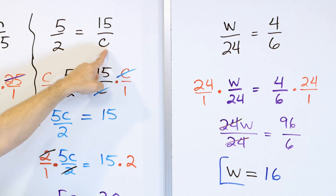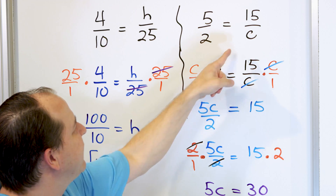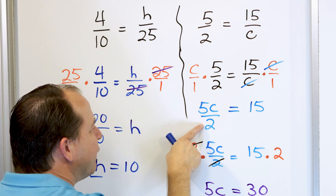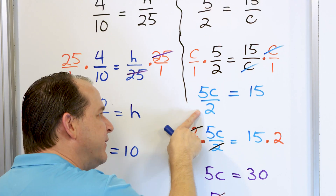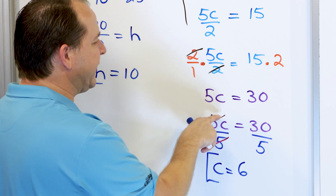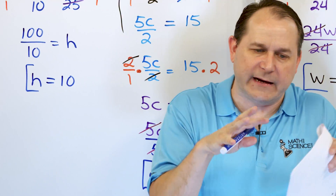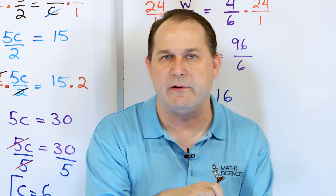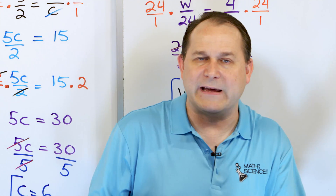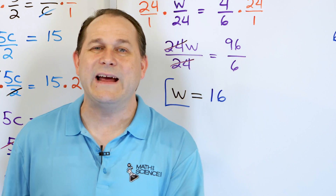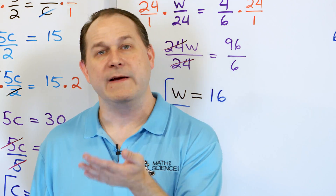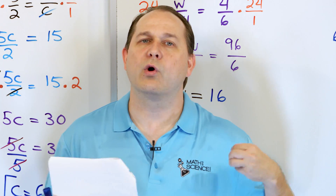If the unknown variable is on the bottom, the very first step is to bring it to the top by multiplying both sides by the variable itself. Then, to unpack and get the variable by itself, you do the opposite operation at each layer — like unwrapping a present to get to the innermost box. If you see multiplication, you do division. If you see division, you do multiplication. Later, we'll solve equations with addition and subtraction — if you see addition, you'll do subtraction, and vice versa. We're always doing the opposite.